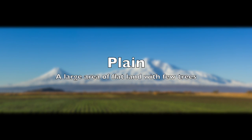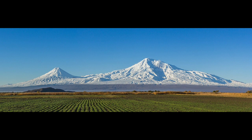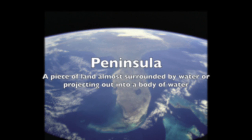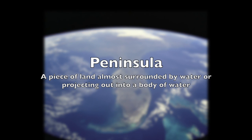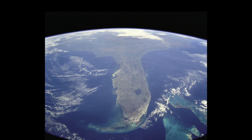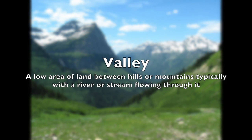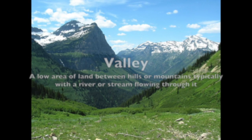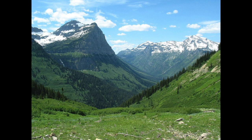Plain: a large area of flatland with few trees. Peninsula: a piece of land almost surrounded by water or projecting out into a body of water. Valley: a low area of land between hills or mountains, typically with a river or stream flowing through it.